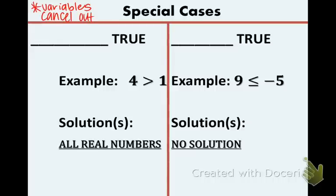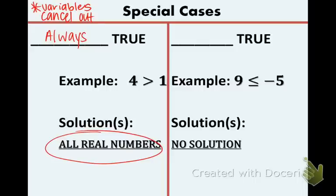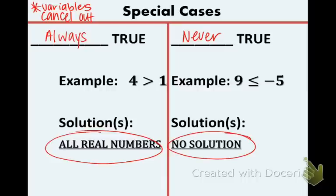Here's the first case. When you get a statement that is always true, such as 4 is greater than 1, your solution is going to be all real numbers. That means every single number you plug in for the variable will make the inequality work. Another special case is when you get an answer that is never true. An example would be 9 is less than or equal to negative 5 — 9 is obviously bigger than negative 5, not less than. If that happens, you get no solution, meaning no number will work when substituted in for the variable.